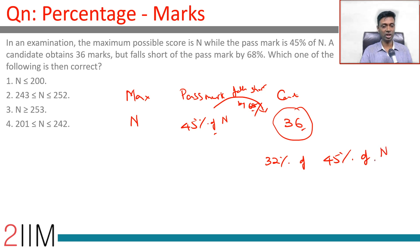It falls short by 68%, or you take this number, reduce it by 68%, we will get this. If you reduce something by 68%, it becomes 32% of whatever it was.